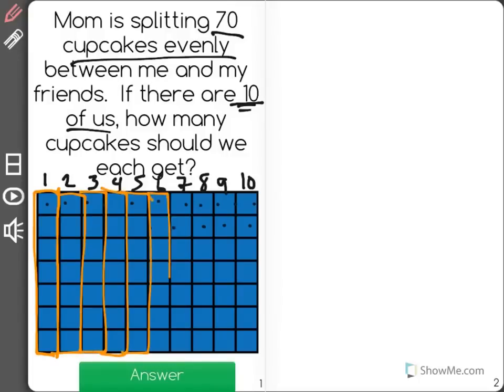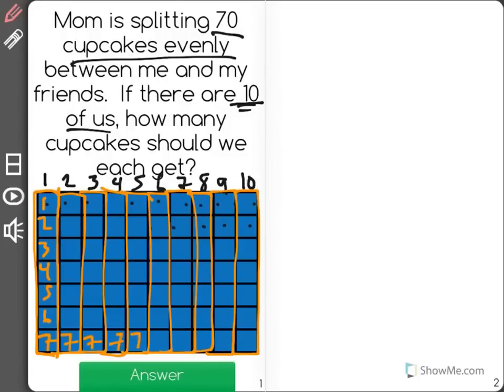And as I fill these out, you could see that if we were to take 70 cupcakes and split them up evenly so 10 people got the same amount, person 1 would have 4, 5, 6, 7, and so would every other person that was splitting those cupcakes. They would each get 7 cupcakes.